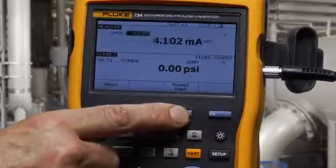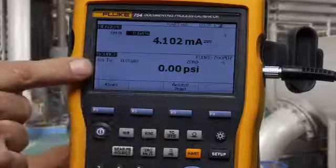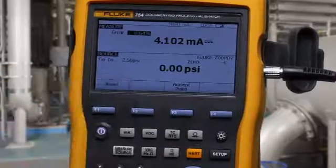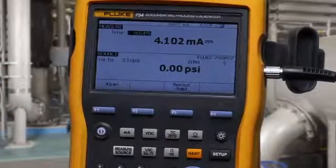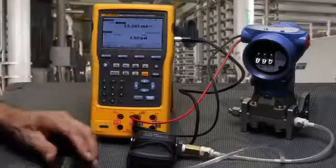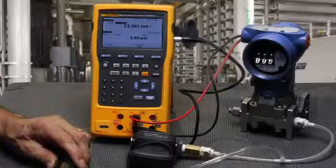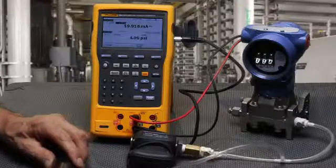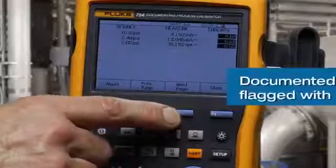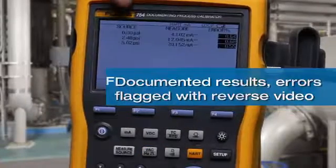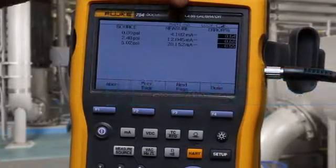Manual test tells us the pressure to apply. Accept. Go to 2.5 PSI. Pump up to 2.5 PSI and accept. And go to 5 PSI and accept. And you have the recorded pressure that's applied, the milliamp that's measured, and the error percent of span.